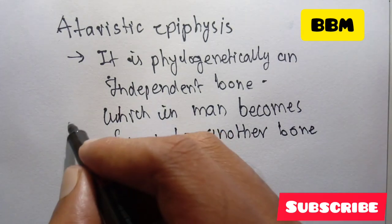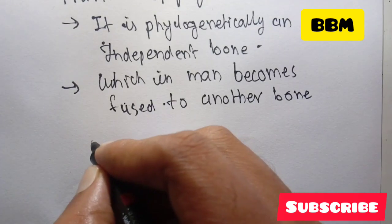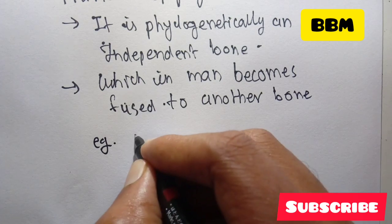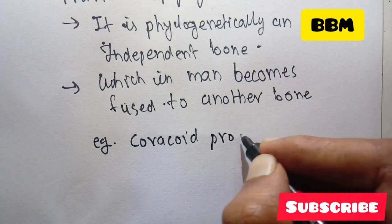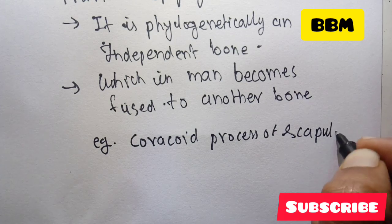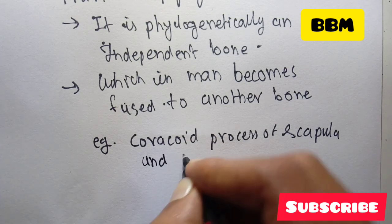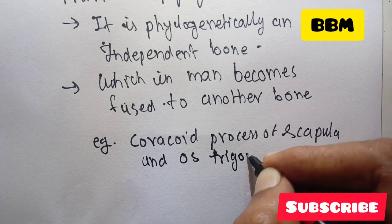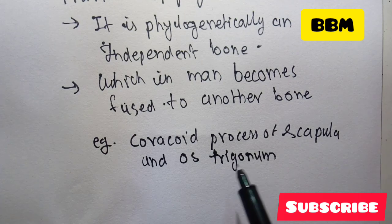Examples of Atavistic Epiphysis include the coracoid process of the scapula and os trigonum, which is the lateral tubercle of the posterior process of the talus.